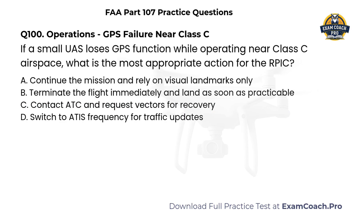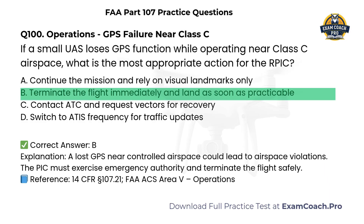Operations. GPS failure near Class C. If a small UAS loses GPS function while operating near Class C airspace, what is the most appropriate action for the remote PIC? A. Continue the mission and rely on visual landmarks only. B. Terminate the flight immediately and land as soon as practicable. C. Contact ATC and request vectors for recovery. D. Switch to ATC's frequency for traffic updates. Correct answer: B. A lost GPS near controlled airspace could lead to airspace violations. The PIC must exercise emergency authority and terminate the flight safely.